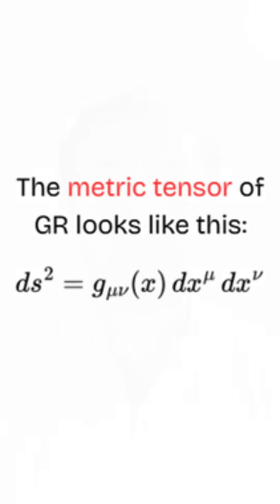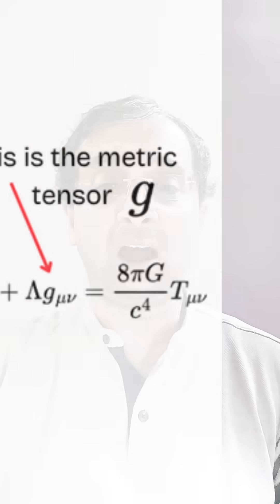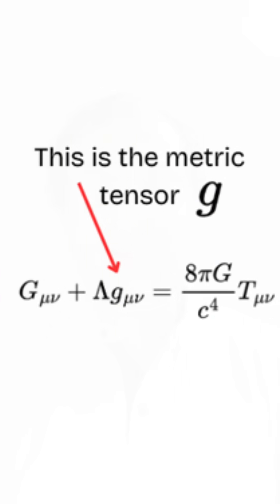The metric tensor is featured with indices and you can find it at the heart of Einstein's field equation. It is the tensor which measures distances, angles, and how things bend. Intuitively you can think of it as a ruler, but this ruler operates not in flat space but in curved space.